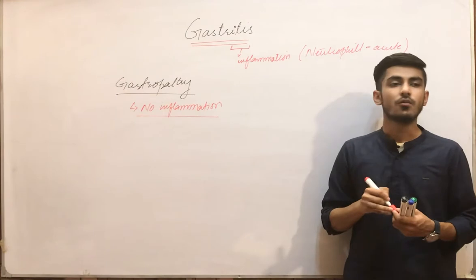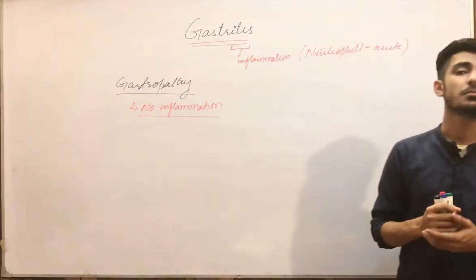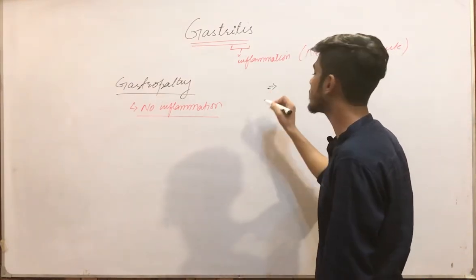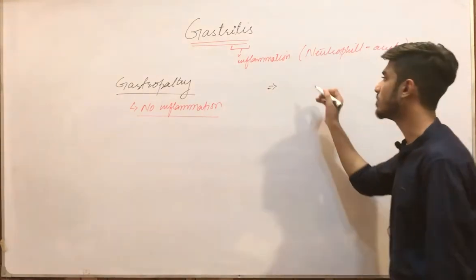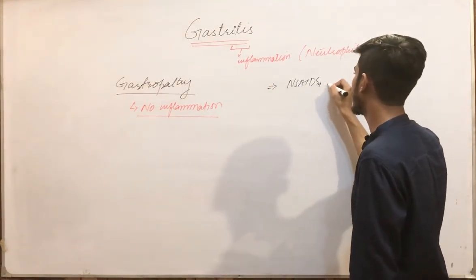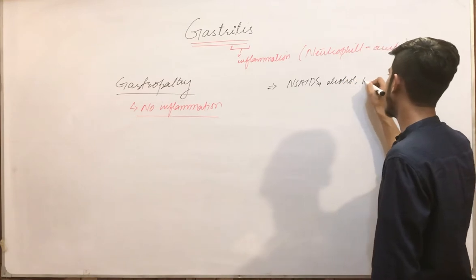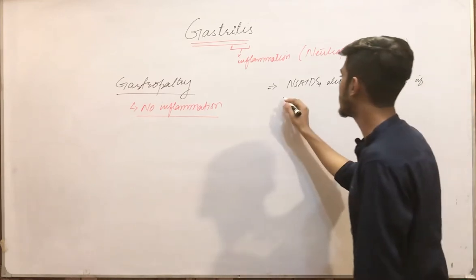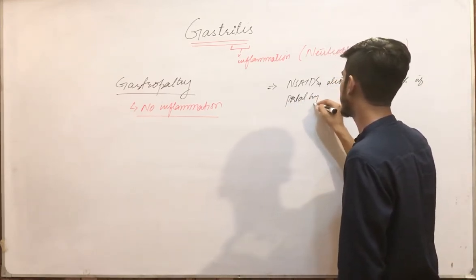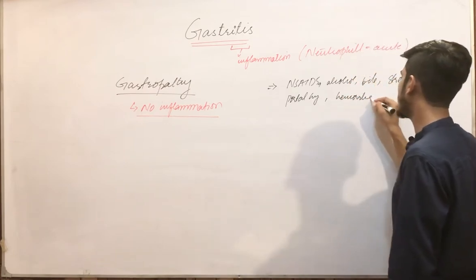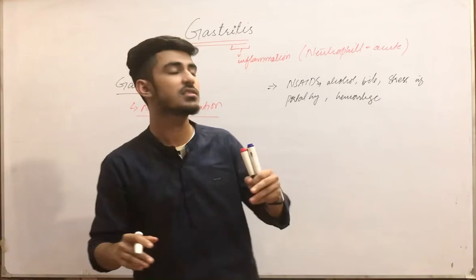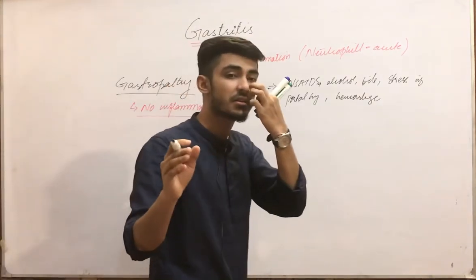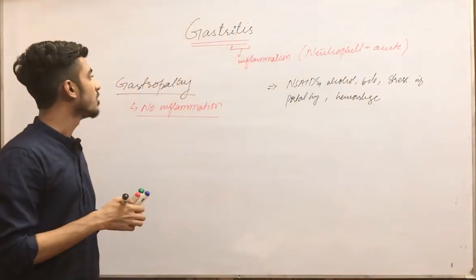What are the basic causes of damage to the stomach mucosa? The main agents that cause mucosal damage are NSAIDs, alcohol, bile, stress-induced injury, portal hypertension, and hemorrhage — all of these can result in mucosal damage.